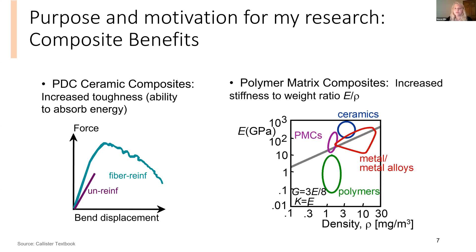Another example is polymer matrix composites. In the green bubble we can see where polymers lie — they have low density and are easily machinable, which are key benefits. However, compared to ceramics and metals, their stiffness and strength are much lower. So in order to improve stiffness while retaining the low density property, we can combine ceramics into polymers to increase stiffness while also maintaining the machinability and low density of a polymer.